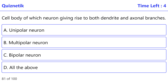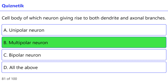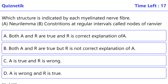The cell body of which neuron gives rise to both dendrite and axonal branches? Correct option is B: multipolar neuron. Which structure is indicated by each myelinated nerve fiber? Correct option is B: constrictions at regular intervals called nodes of Ranvier.